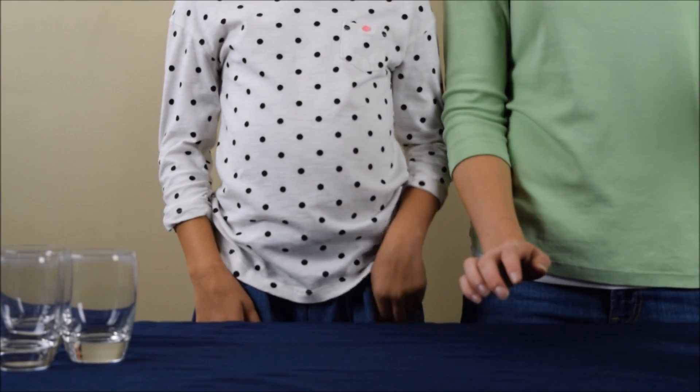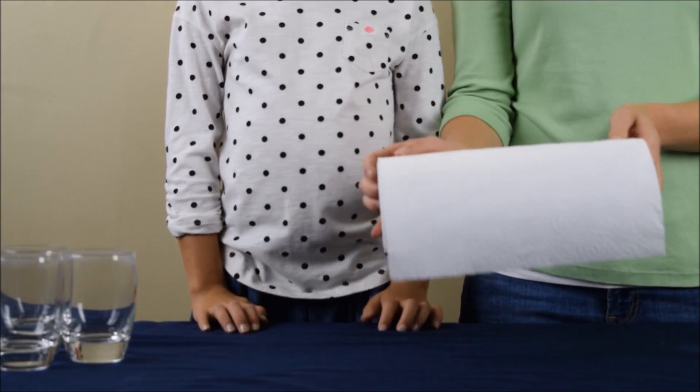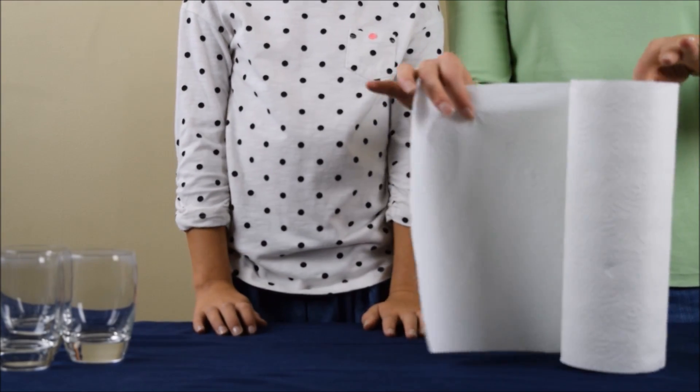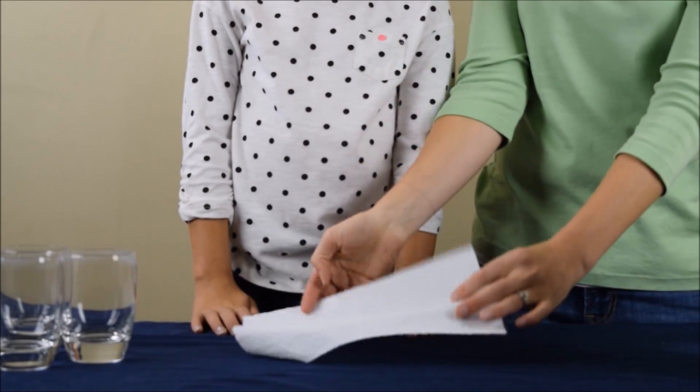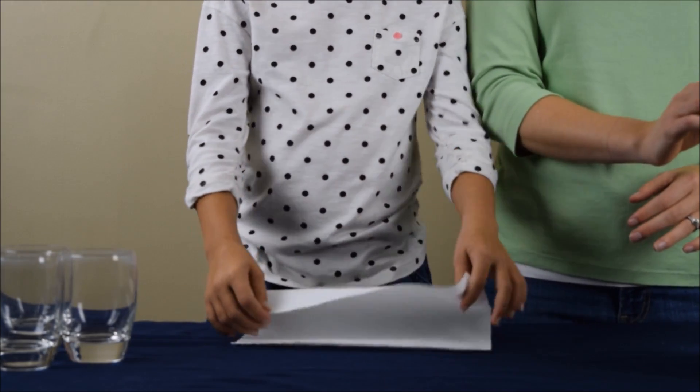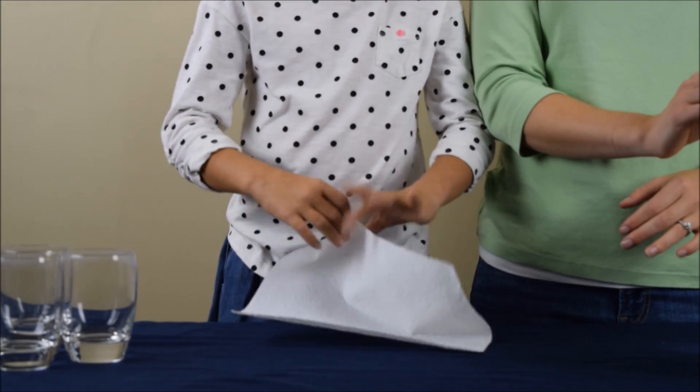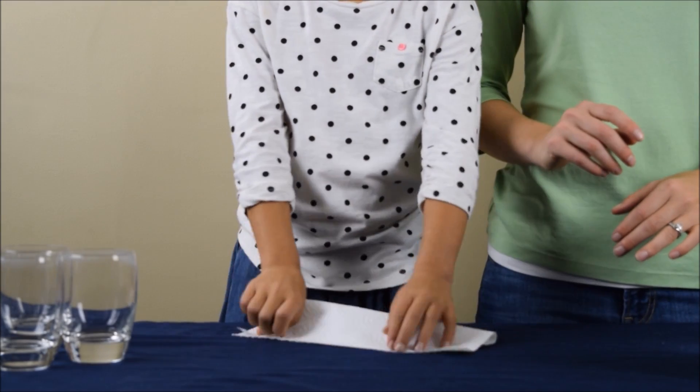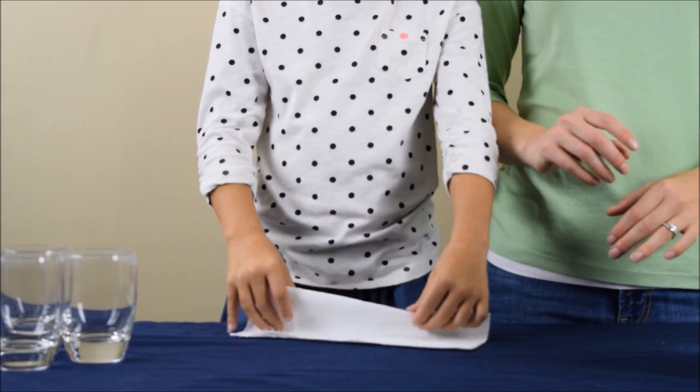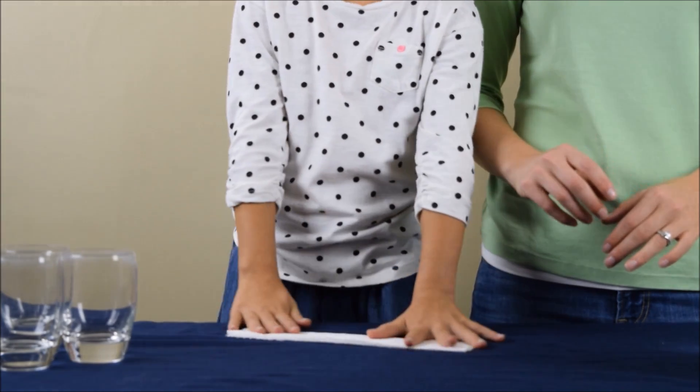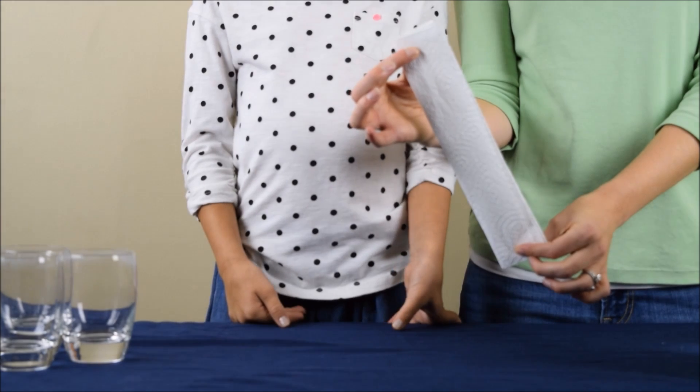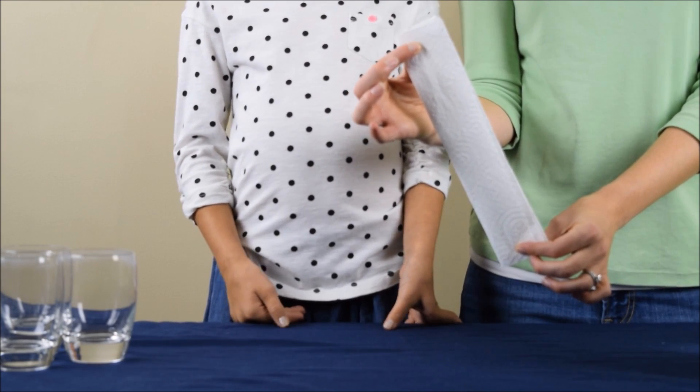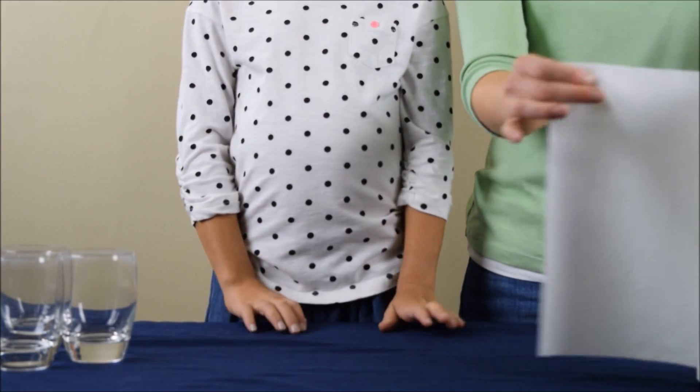So to start off the walking water science experiment, we are going to get our paper towels ready. I'm going to pull off a square of paper towel and we are going to fold that in half once and then fold it in half again. What you're left with is a paper towel that is about one and a half inches wide, and you need two of them.